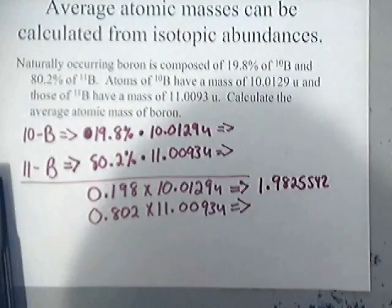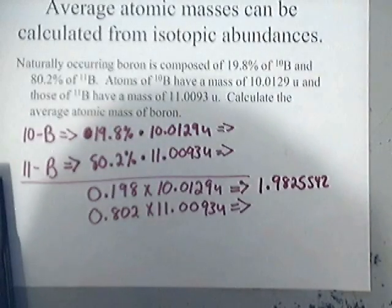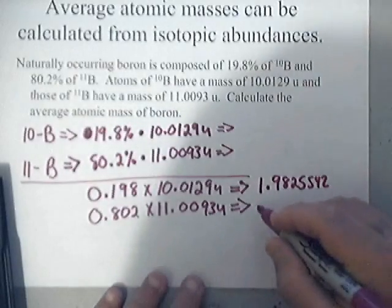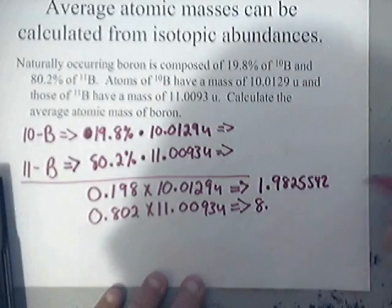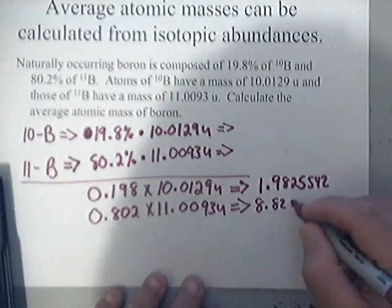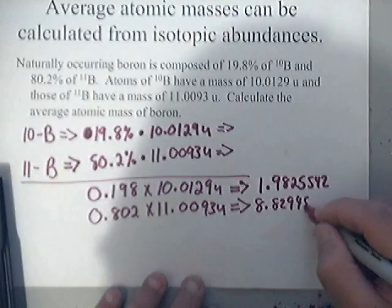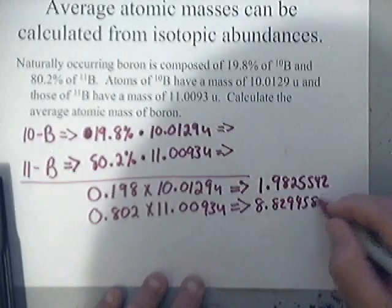And that will give me 1.9825542. On this other one down here, that's 0.802 times 11.0093U. Anyway, that gives me 8.8294586.